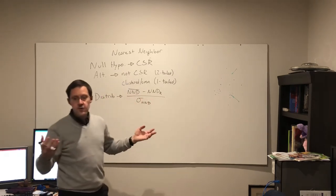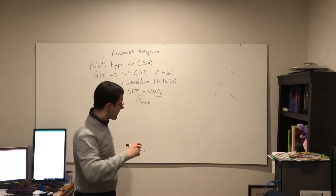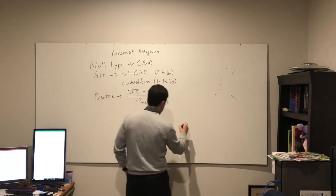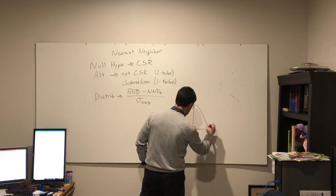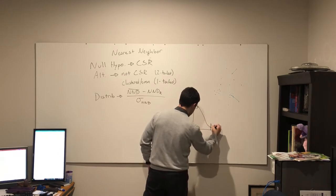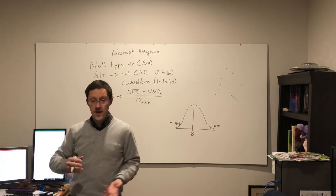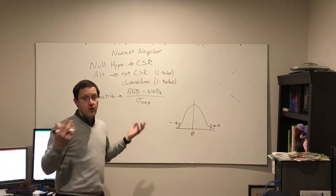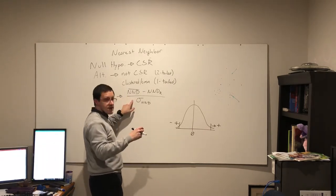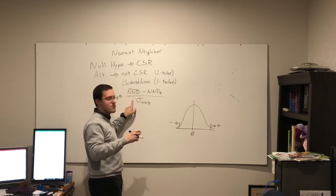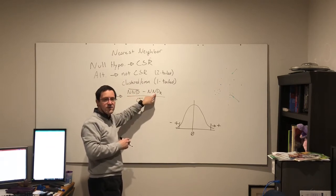So I know, as I said, I can use a z-test following this particular distribution. If my value here is close to zero, basically what that means is my average distance to nearest neighbor is pretty close to what I expect if they're random.